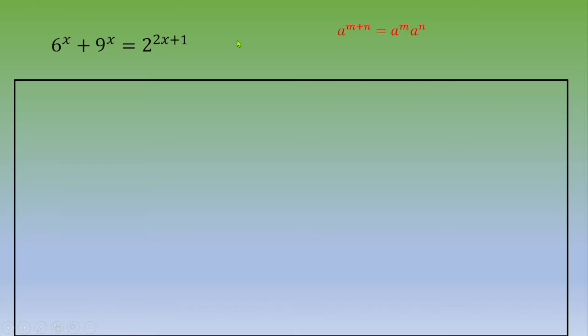If you apply this rule to this equation, you get 6 power x plus 9 power x equals 2 power 2x times 2.